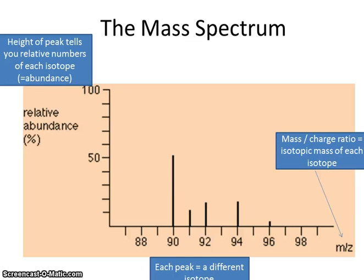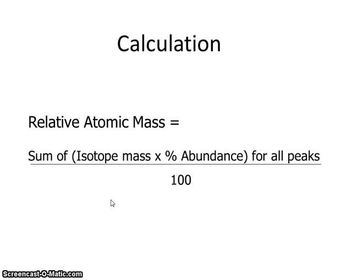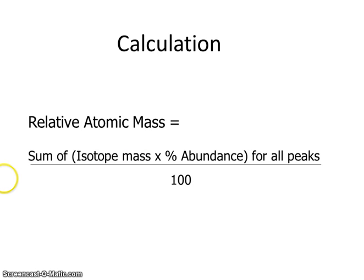So how is this information used? We can read off the abundance of each isotope from the mass spectrum and use that in a calculation of relative atomic mass. Relative atomic mass is described as the weighted average mass of all the isotopes present in a sample. That means if you have two different isotopes, you need to know how abundant each one is and take that into account. For every isotope, we find the mass, multiply it by the abundance, do that for every isotope, add it all up, and divide by 100. Let's see an example of how that works.